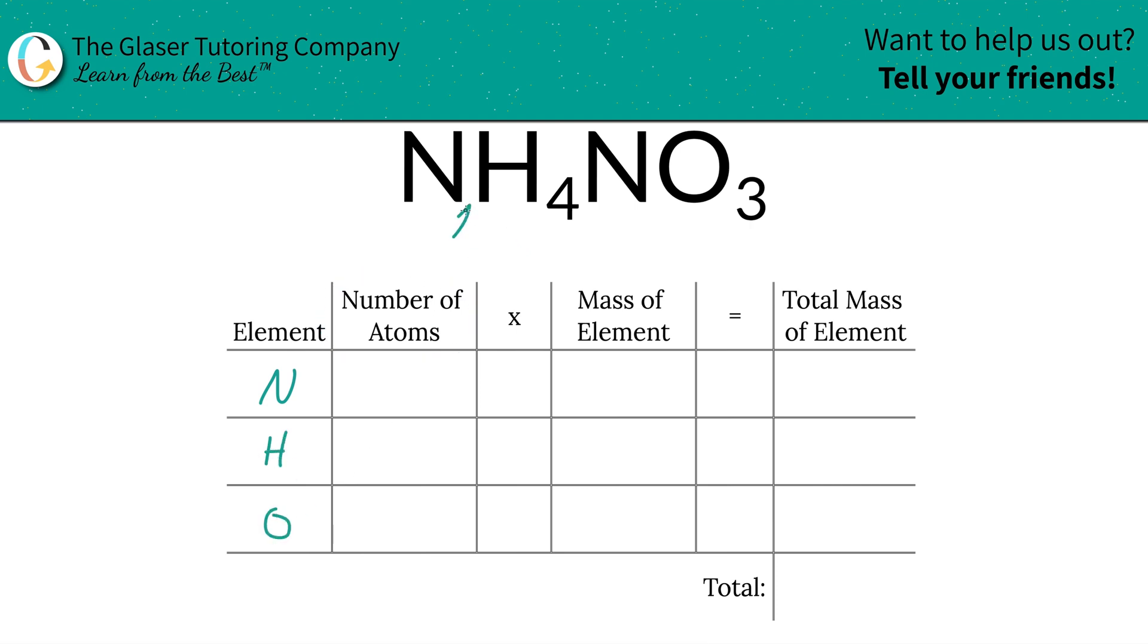Next is to identify the number of atoms of each, and that's where the subscripts come into play. So nitrogen, if you don't see a subscript, just put in a one. We have one nitrogen here and one nitrogen there, so in total there's going to be two nitrogens everywhere.